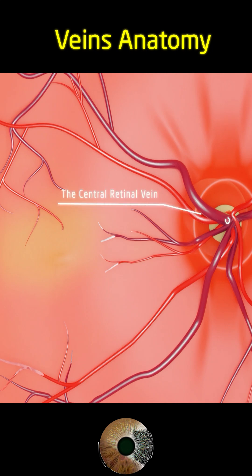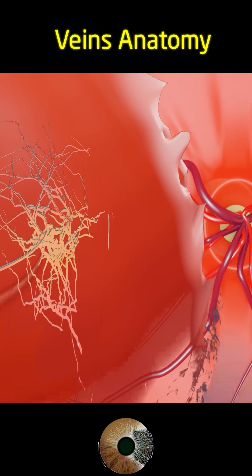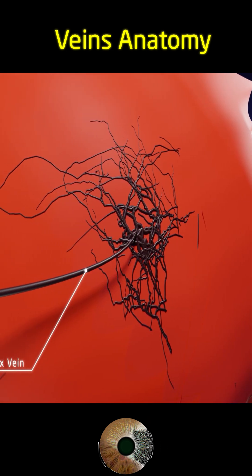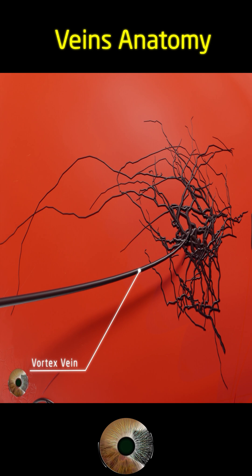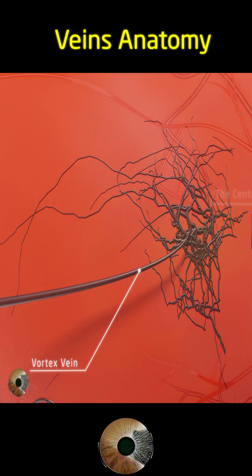The venous drainage of the eye mirrors the arterial system in many ways. There are two major venous systems: the central retinal vein, draining the inner retina, and the vortex veins and ciliary veins, draining the choroid, ciliary body, and iris.